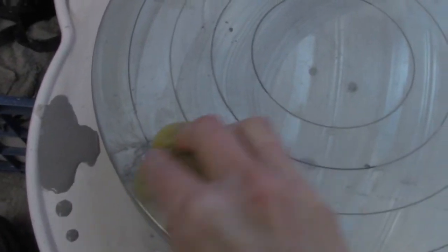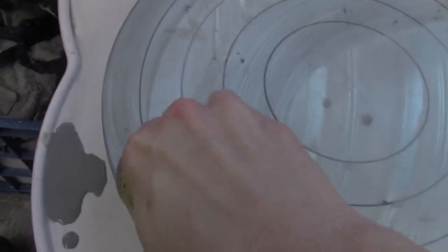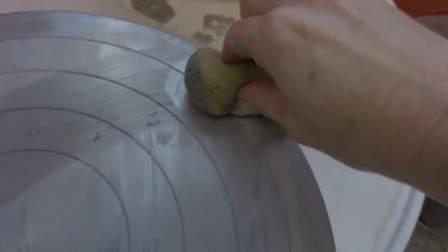And then make sure that the little parts of the wheel, the little nubs that the bat sits on, make sure that those get nice and clean, and just squeeze those out.